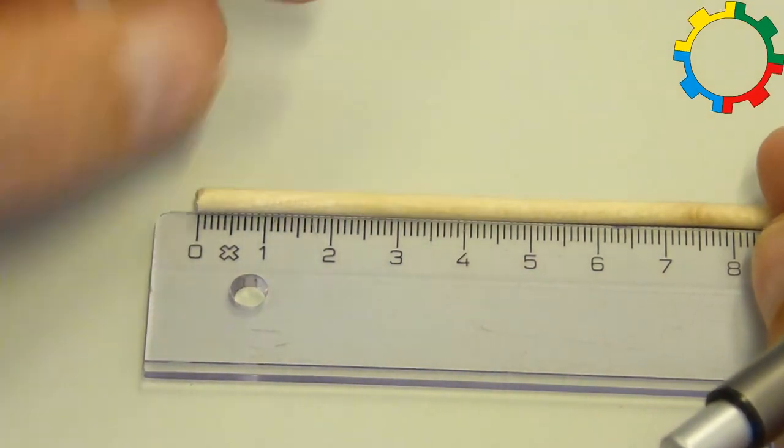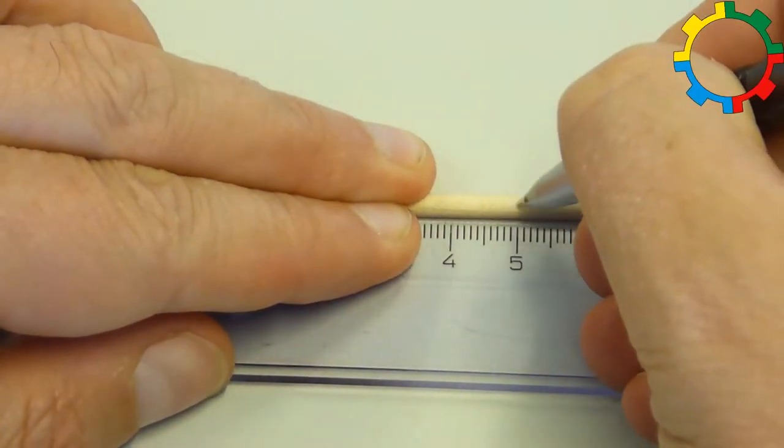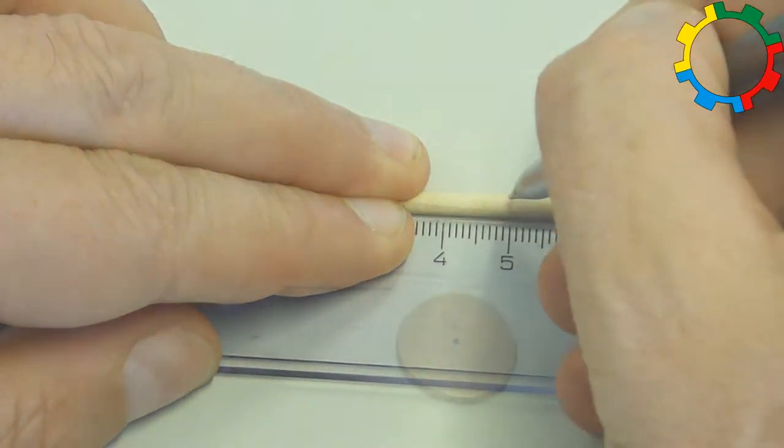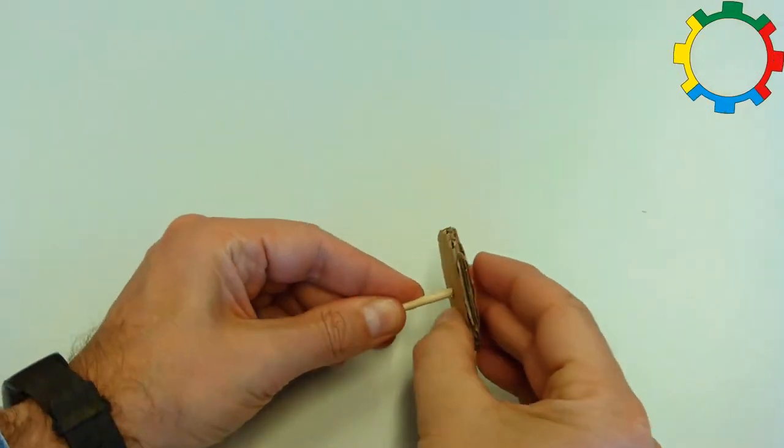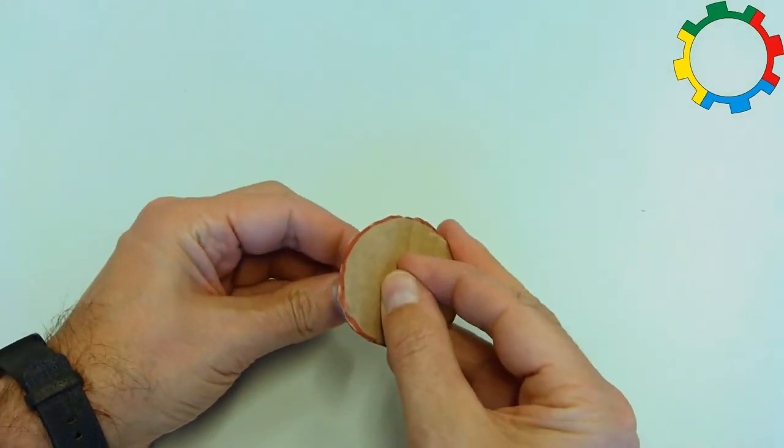Measure a piece of the skewer that is 5 centimeters long and cut it off. This is the winch's axle. Insert this piece in one of the circles so that it sticks out on one side only. This is the spool of the winch.